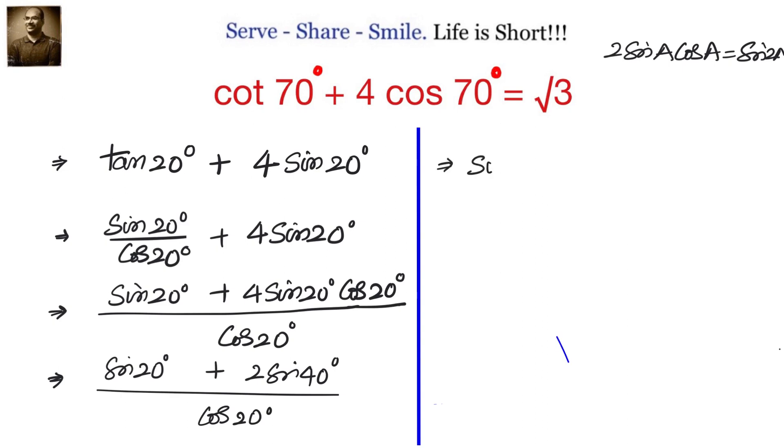This equals sin 20 plus 2 sin 40. We'll write it as sin 40 plus sin 40 because we want to use sin 20 plus sin 40.